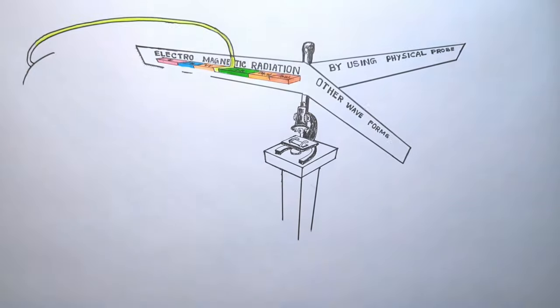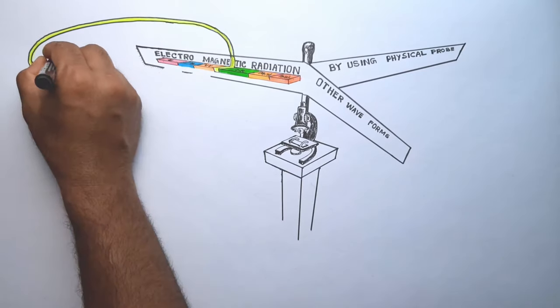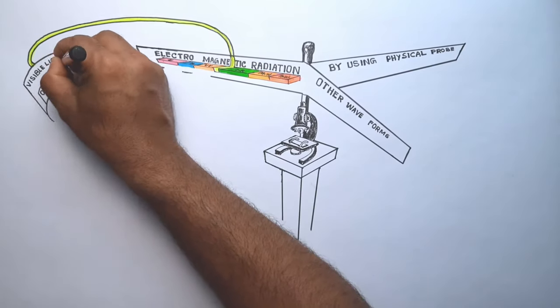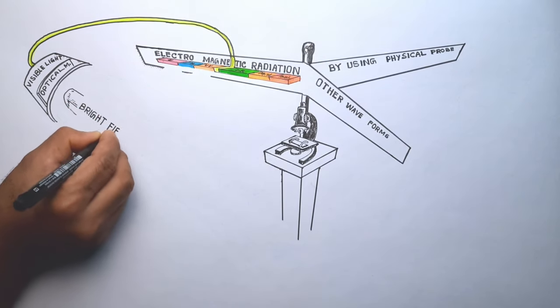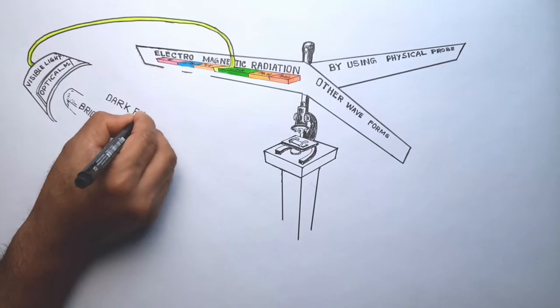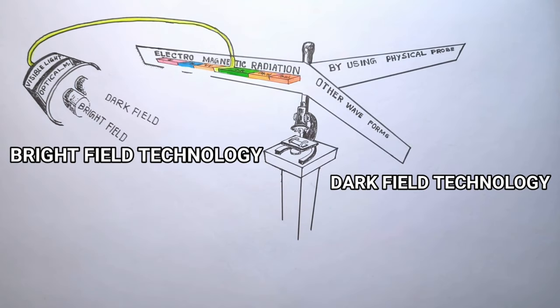Microscopes where visible light of electromagnetic radiation is used to illuminate the sample are known as optical microscopes or light microscopes. All optical microscopes may again be divided into two types depending on the technique we use to enhance the contrast of the image: the bright field technology and the dark field technology.